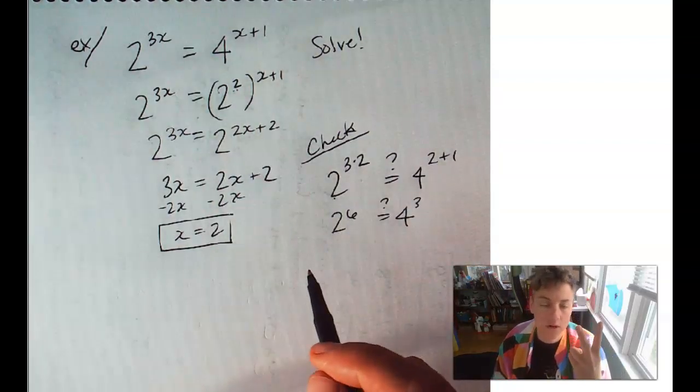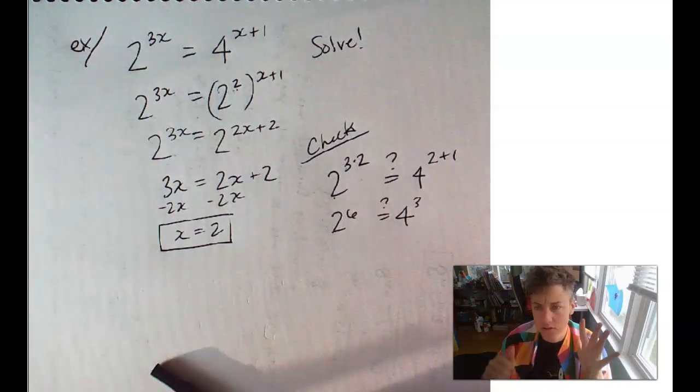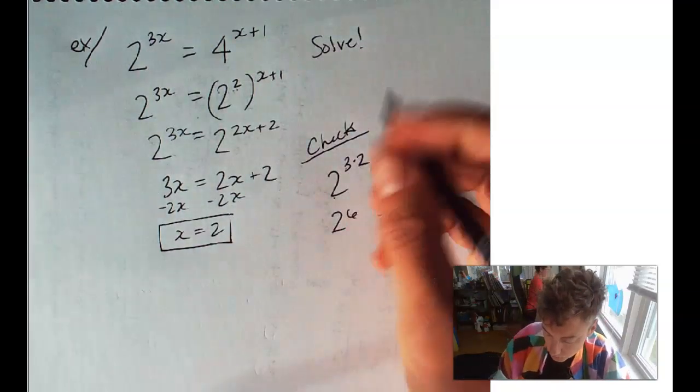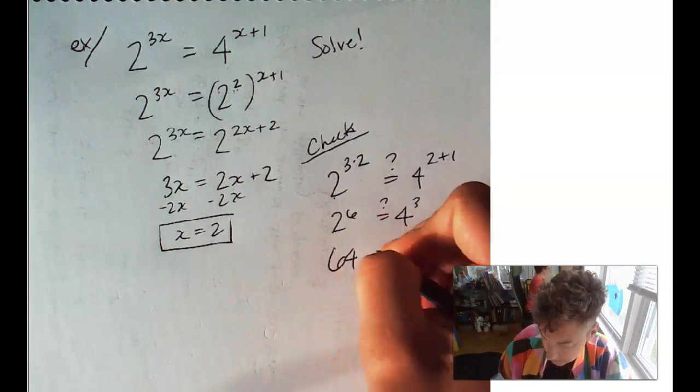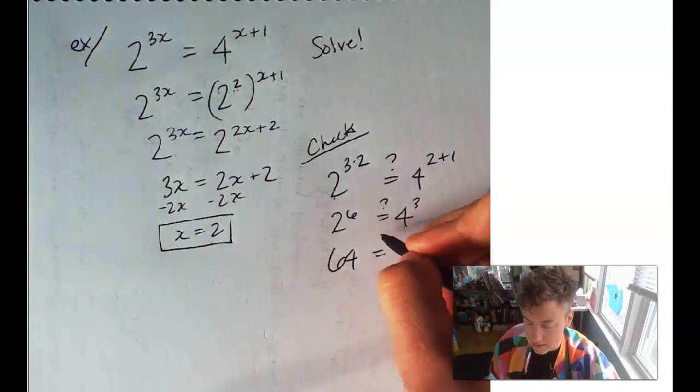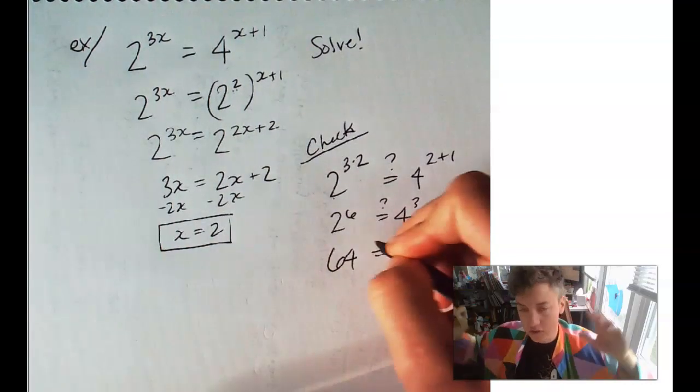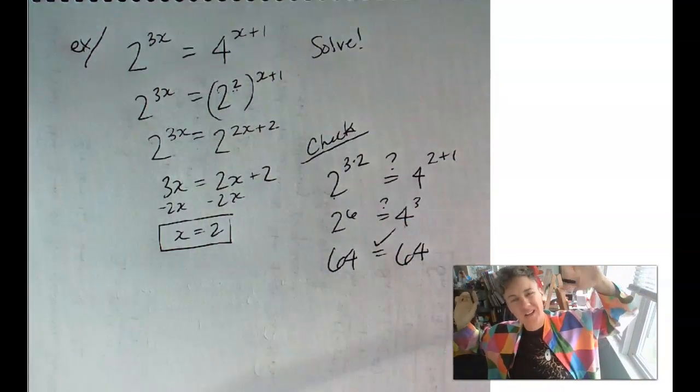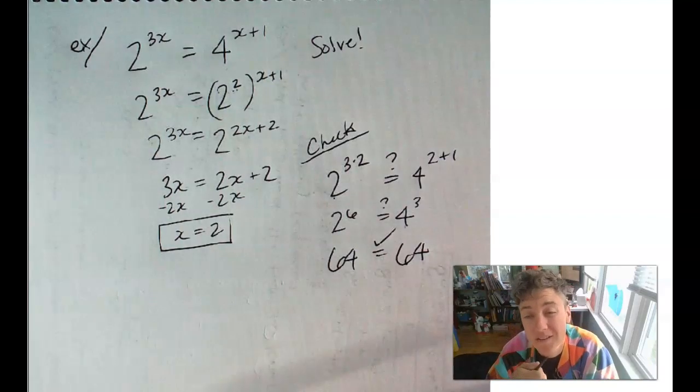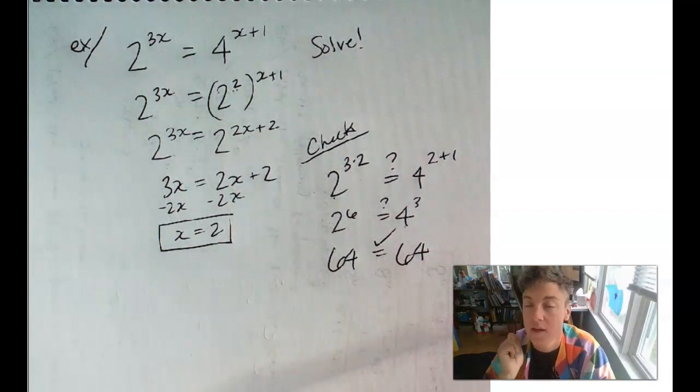2 to the 6, does that equal 4 to the 2 plus 1 is 3? 2 to the 6 is 2, 4, 8, 16, 32, 64. And 4 cubed is 4, 16, 64. Cool! Check, check, check! You could also plug this into the Wolfram and check your answer.